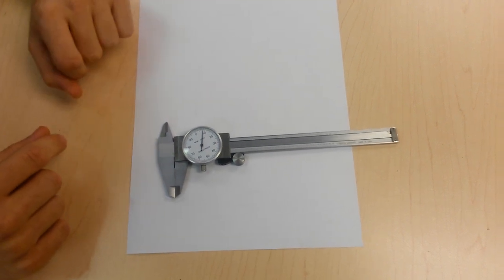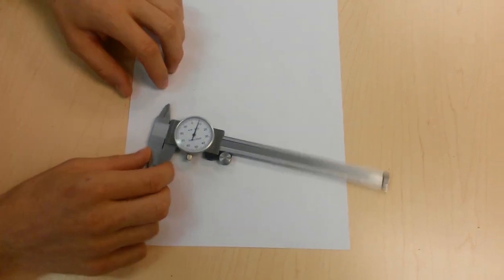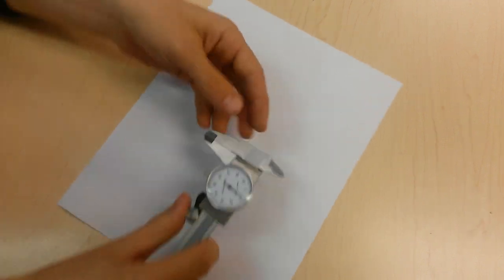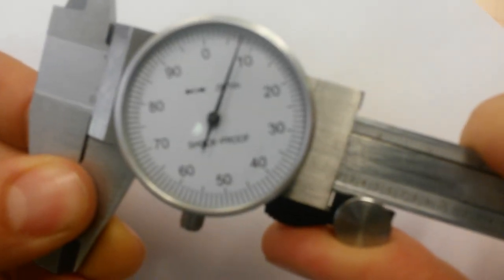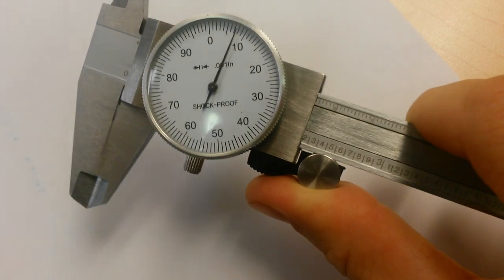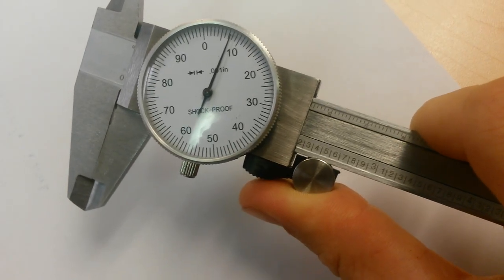The first thing you want to do when you get the dial caliper is you want to make sure that it's zeroed out. So if you look at it right here, you can see the caliper is completely closed. The distance should be zero, but yet it's not reading an actual zero.